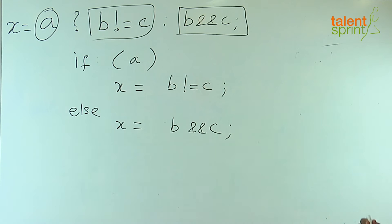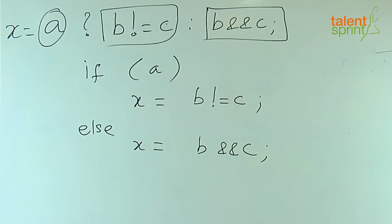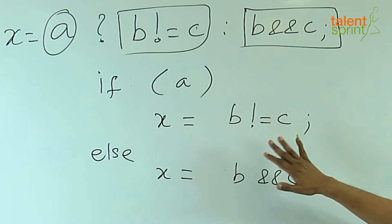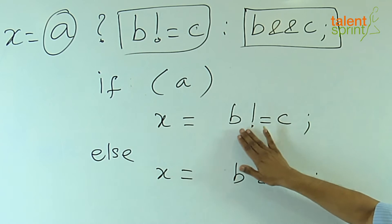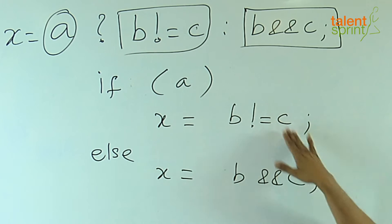Let us look at it again. We are effectively saying x takes the value of B not equal to C, that is you evaluate the logical expression B not equal to C if A is true, otherwise x takes the value of the expression B and C. From this we can infer A, B, C all are logical variables containing true or false values. So, what is this whole expression doing?